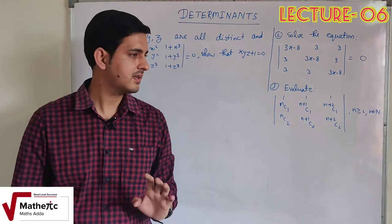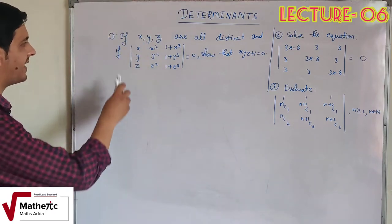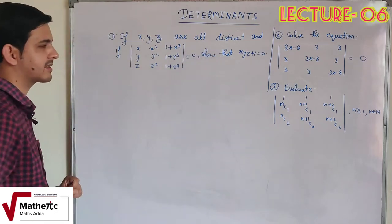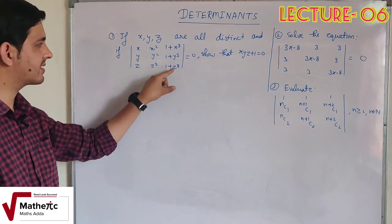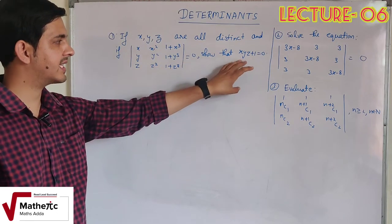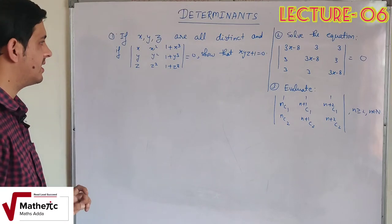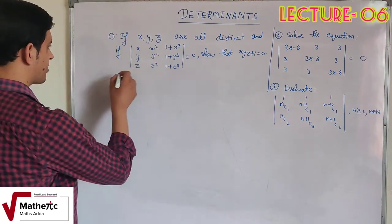The first question is: if x, y, z are all distinct — distinct ka matlab hai teeno different hain — and if the value of this determinant is zero, show that x, y, z plus 1 is equal to zero. So this solution — we will solve the determinant.